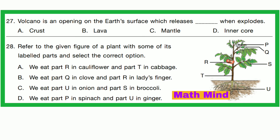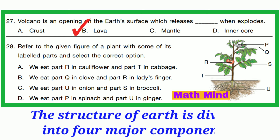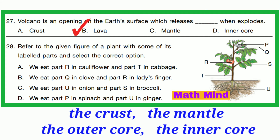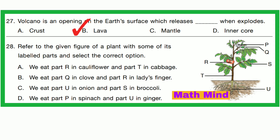Question number 27. A volcano is an opening of the earth's surface which releases dust when it explodes. Option B is correct: lava. The structure of the earth is divided into four major components: the crust, the mantle, the outer core, and the inner core. From volcanic eruption, molten lava comes from the mantle layer. So option B is correct.